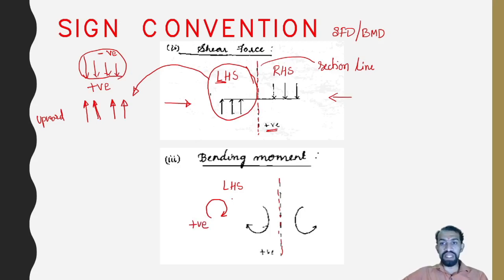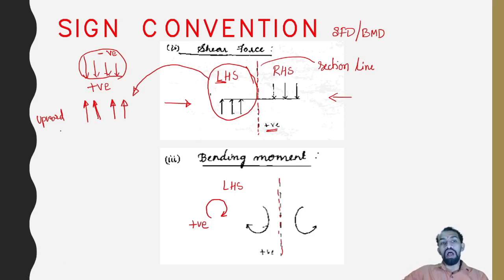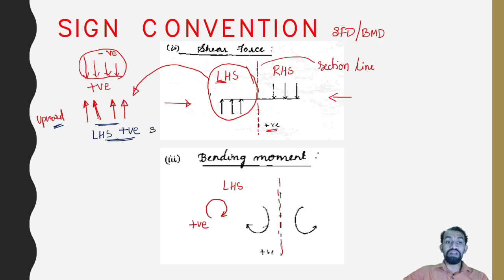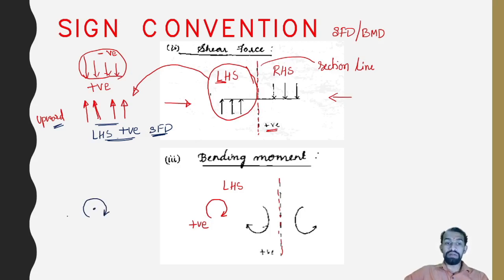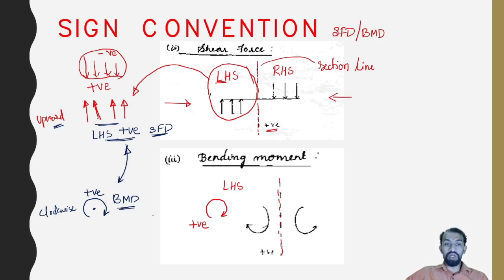To summarize the sign conventions: upward force acting on the left-hand side is positive in the shear force diagram. For the bending moment diagram, clockwise rotation on the left-hand side is always positive. Remember only these two connections — the others can be easily imagined and derived.